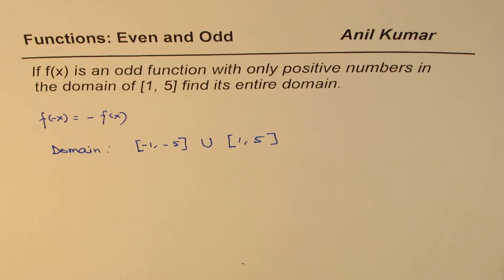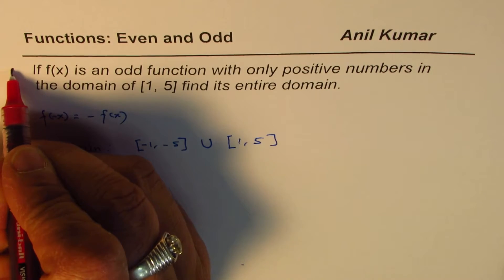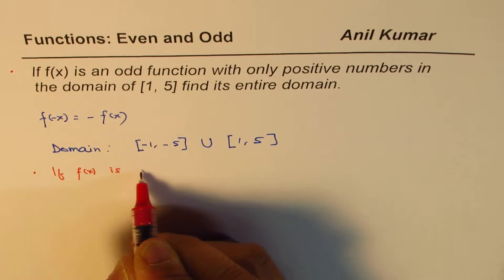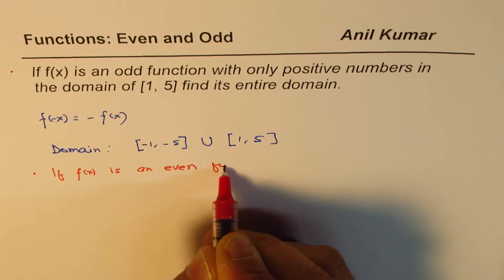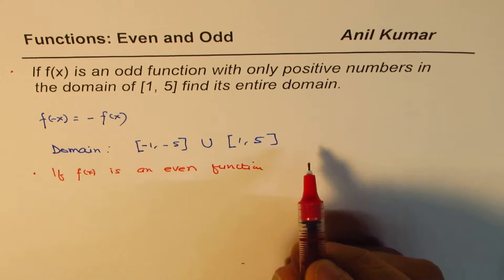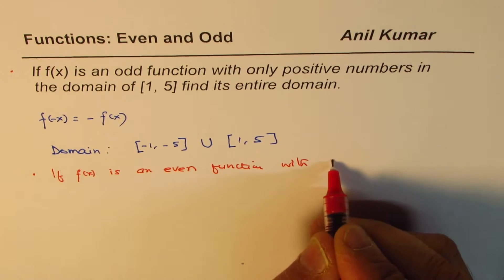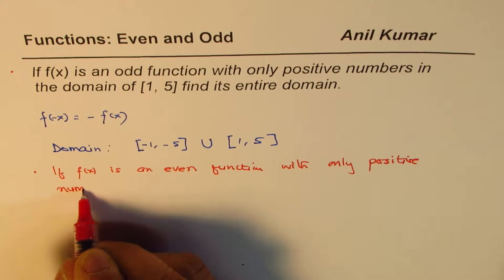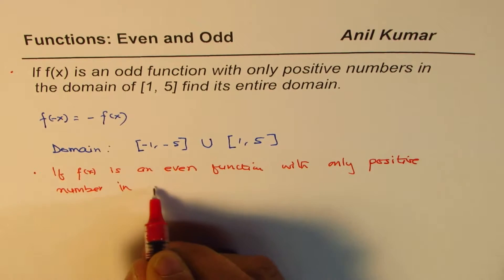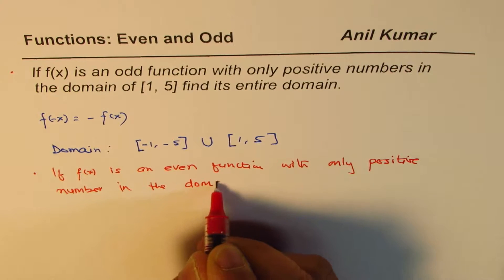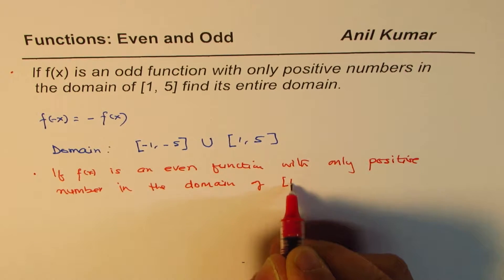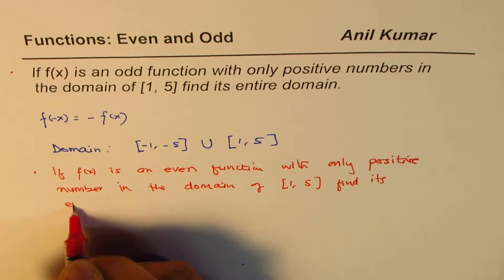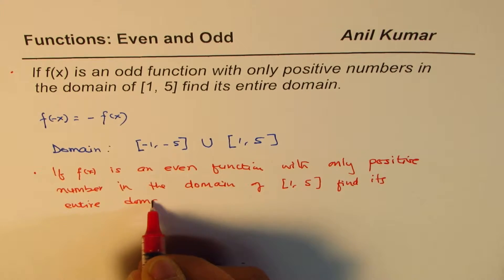So the domain will be the union of the given domain and its reflection about the origin. Now, if I change the question: if f of x is an even function — not odd, even — and with only positive numbers in the domain from 1 to 5, find its entire domain.